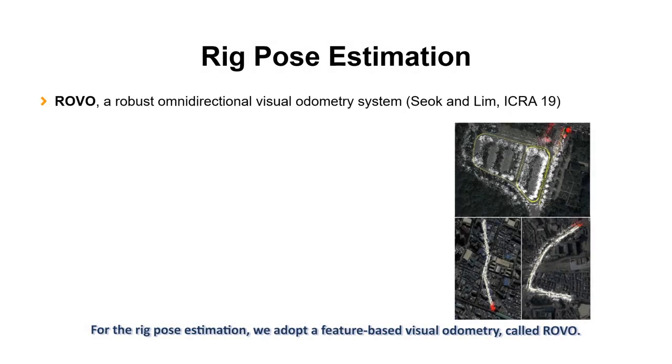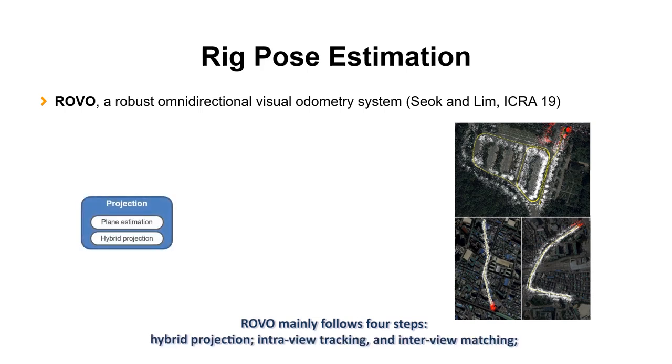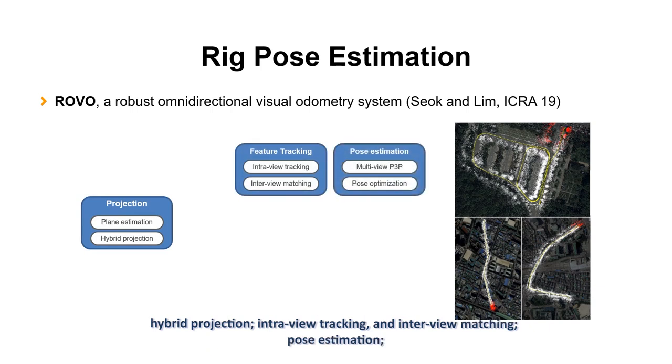For the rig pose estimation, we adopt a feature-based visual odometry called ROVO. ROVO mainly follows four steps: hybrid projection, intra-view tracking and inter-view matching, pose estimation, and joint optimization.